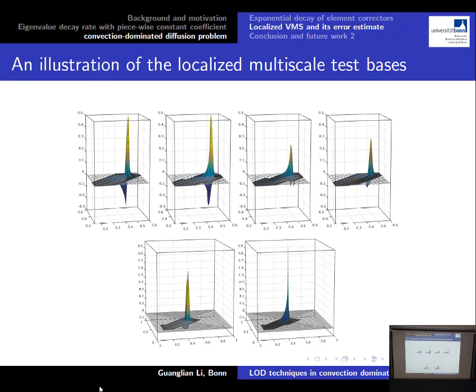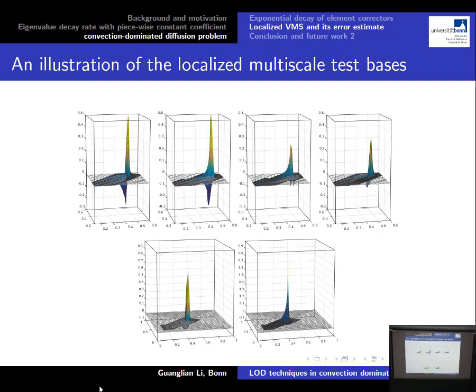We can define the localized multi-scale test space W_{H,L}. This is an illustration of the localized multi-scale test basis for one nodal basis: four localized correctors are computed, summed to get the localized corrector, and then the localized multi-scale test basis is derived by subtracting this from the nodal basis. This gives a good approximation to the global correctors. We have also proved the convergence rate of these localized correctors to the global correctors.